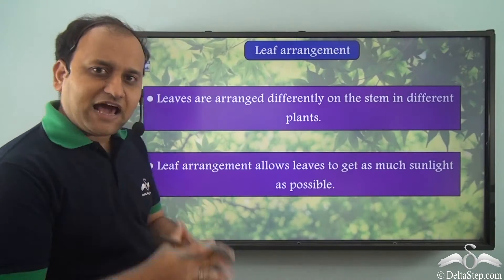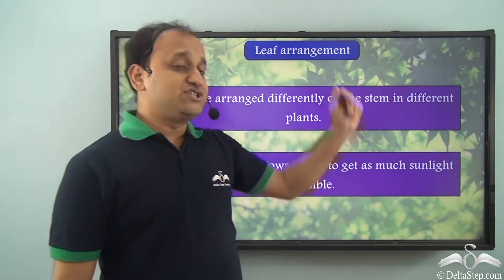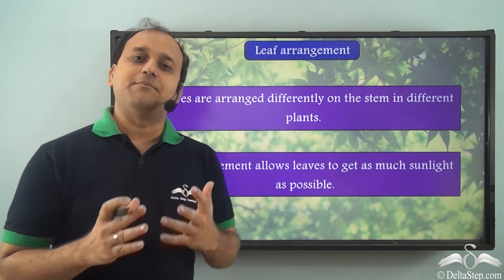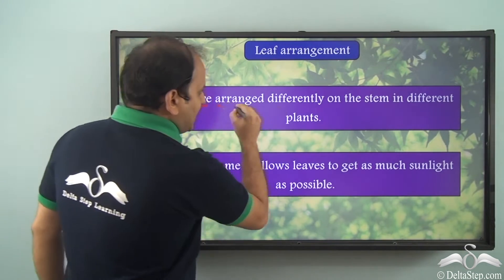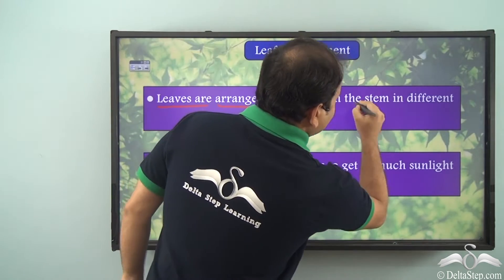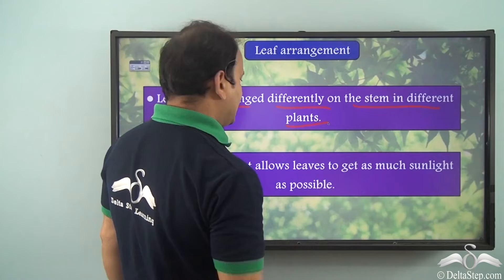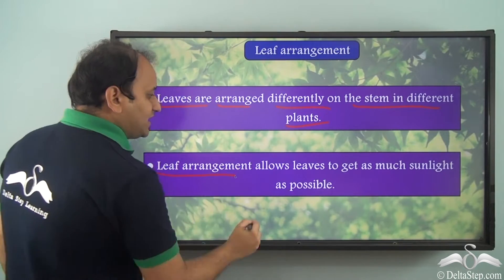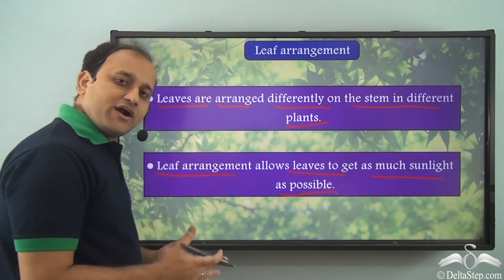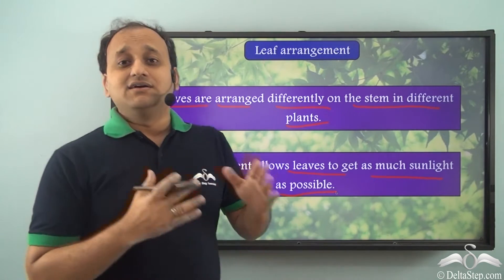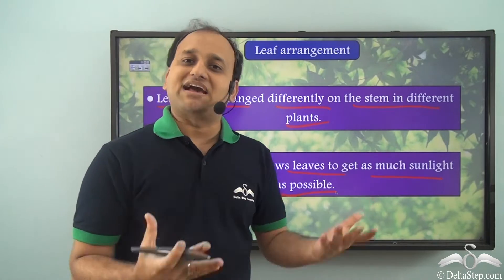Now apart from leaf type, there is another type of categorization — we call it leaf arrangement. The arrangement of leaves is also a very important classification. Leaves are arranged differently on the stem in different plants, and this is the basis of leaf arrangement. Leaf arrangement allows leaves to get as much sunlight as possible, so according to the structure of the plant, it has the leaf arrangement so that leaves can get maximum sunlight.